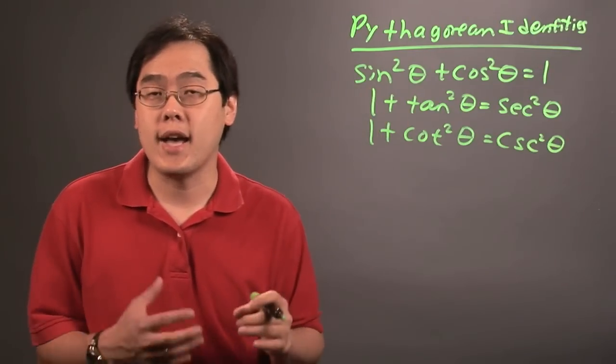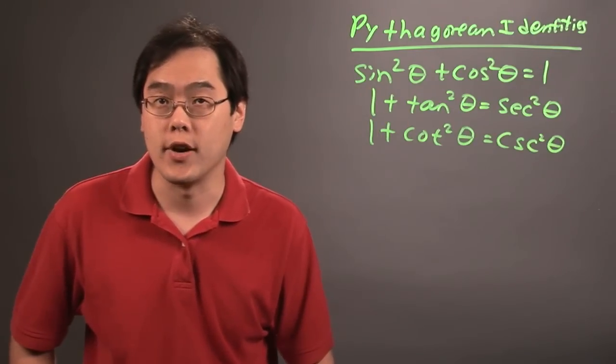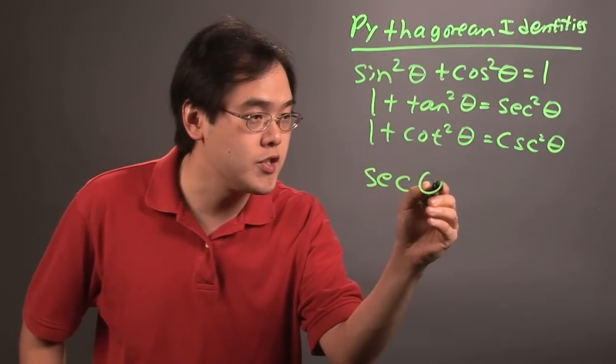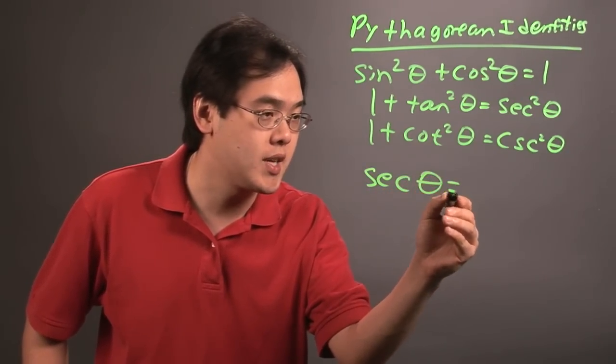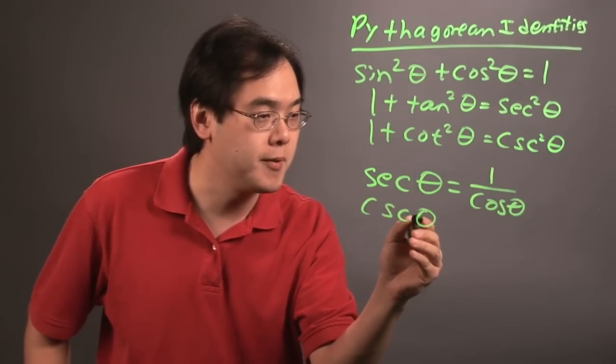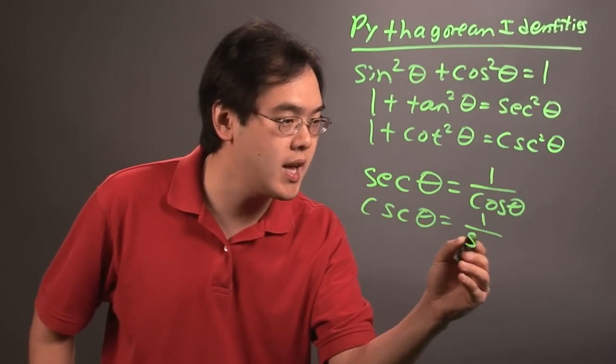In addition to these identities, you may be asked to use some reciprocal functions. For example, when proving trig functions, you may be asked to use the fact that secant theta equals 1 over cosine theta, or cosecant theta equals 1 over sine theta.